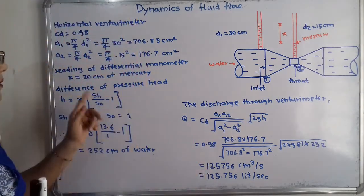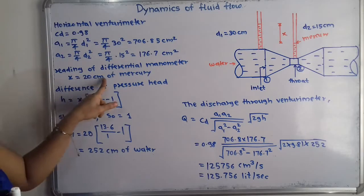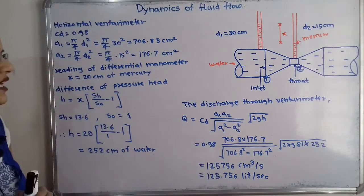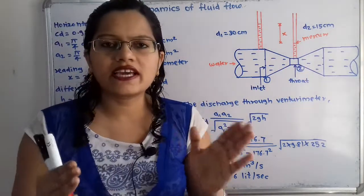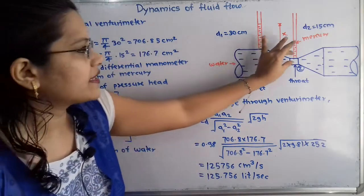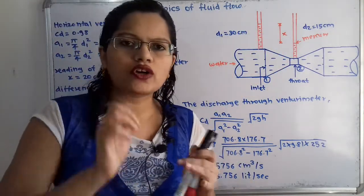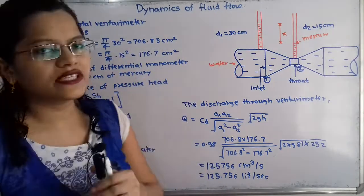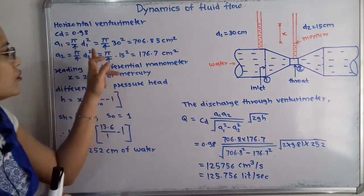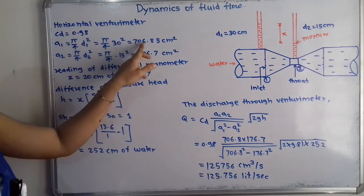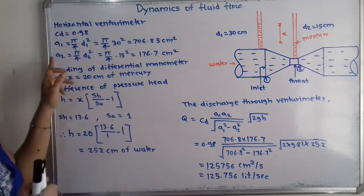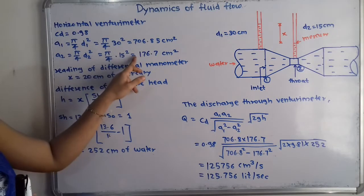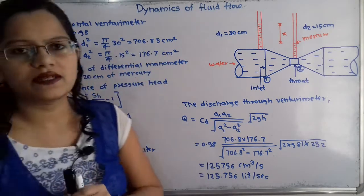Now we calculate the cross-sectional areas a1 and a2. Area a1 equals π/4 times d1 squared, so π/4 times 30 squared equals 706.85 centimeter square. Similarly, a2 equals π/4 times d2 squared, that is π/4 times 15 squared, which equals 176.7 centimeter square.